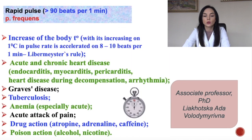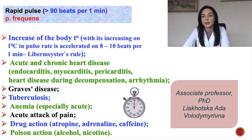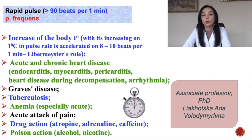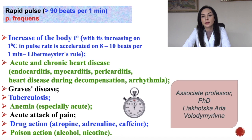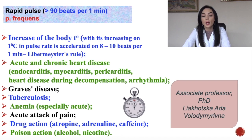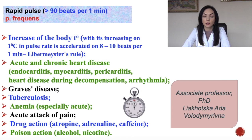Let's talk about rapid pulse — more than 90 beats per minute, also called tachycardia, or in Latin pulsus frequens. Remember the rule of Libermeister: an increase of body temperature accelerates the pulse — with each one degree increase, the pulse rate accelerates by 8-10 beats per minute.